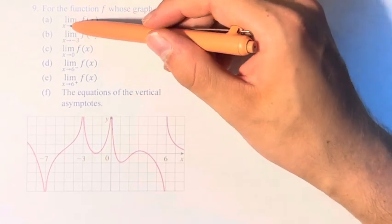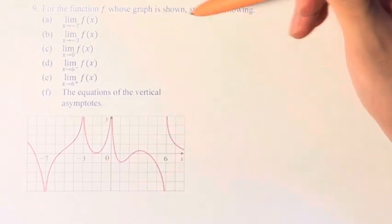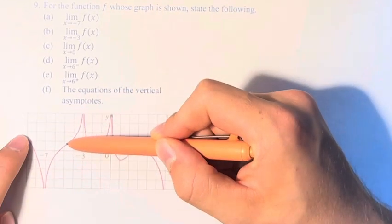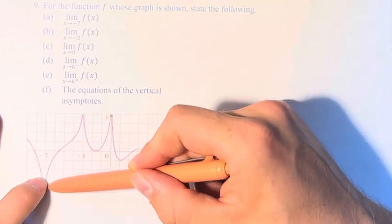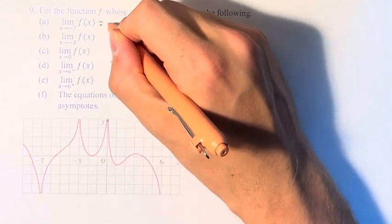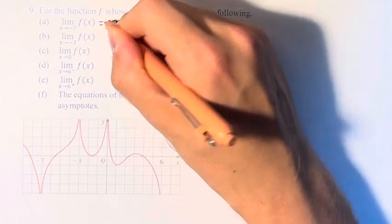So first, we have the limit as x approaches negative 7 of f of x. So x equals negative 7 is right here. And we can see, as we approach negative 7, the value of the function in both directions goes off to negative infinity. Therefore, the value of the limit is equal to negative infinity.